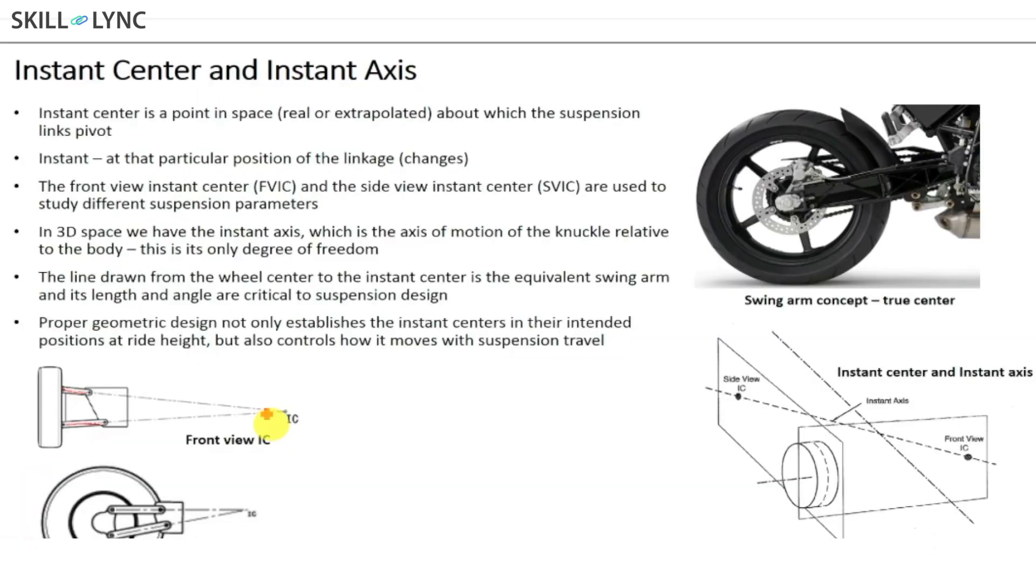This point is going to be different depending on how you're looking at the geometry. In this case, this is what you call the front view instantaneous center. Similarly, for the same model, if I'm looking at it from the side view, there is another instantaneous center called the side view instantaneous center.